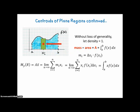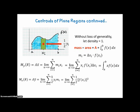For y-bar, it's a little different because the average y is in the middle of each rectangle, so we use ½yᵢ instead of xᵢ. The moment around the x-axis equals the sum of mᵢ times ½yᵢ. Substituting mᵢ = Δx·f(xᵢ) and noting yᵢ = f(xᵢ), we get f(xᵢ) times itself with the one-half, which morphs into the integral from a to b of ½[f(x)]² dx. To get y-bar, we divide that integral by the area a.